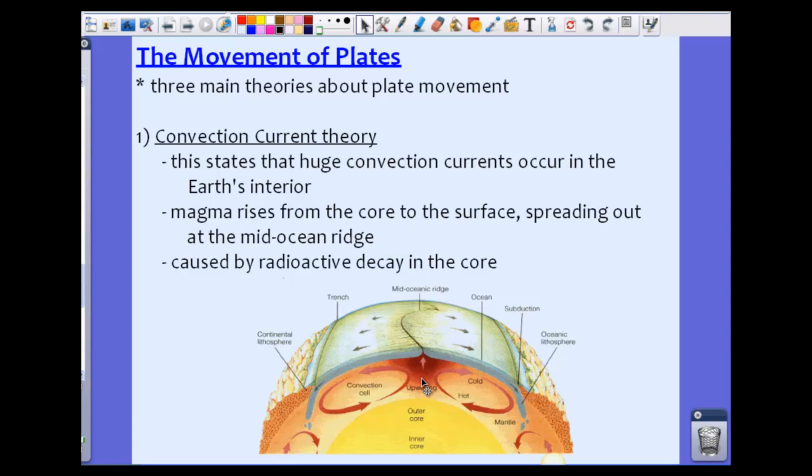Magma rises from the core to the surface, spreading out at these mid-ocean ridges. We're going to talk more about seafloor spreading and how that happens. It's thought that radioactive decay in the core creates these upwellings, that magma to rise up through the mid-ocean ridge. This is the convection current theory.